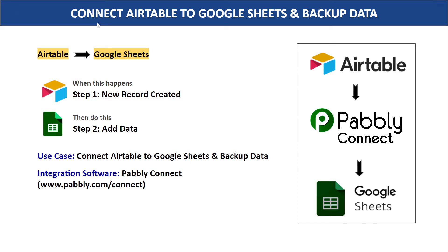Hello everyone. In this video we will learn how to add data from Airtable to Google Sheets and backup your data. Imagine you have added the data of a person called John in Airtable — his name, email address, phone number and all those details. Now you want to add John's data in Google Sheets to create a backup or analyze the data further. You have two choices: manually copy all the details from Airtable into Google Sheets, which is repetitive and tiresome, or bring in some automation so that when a new record is created in Airtable it will automatically add this data into Google Sheets.